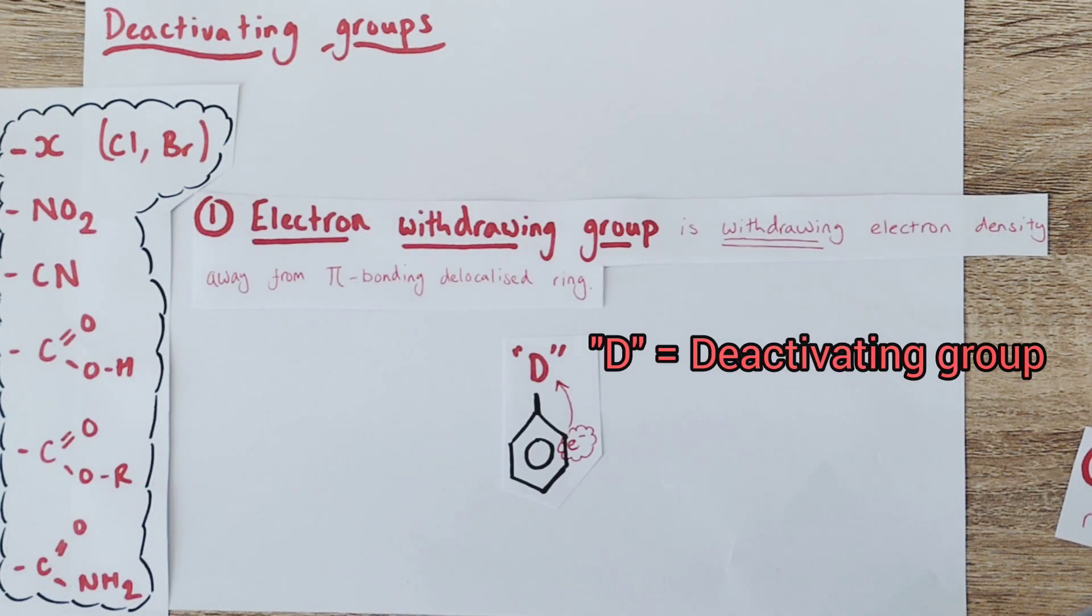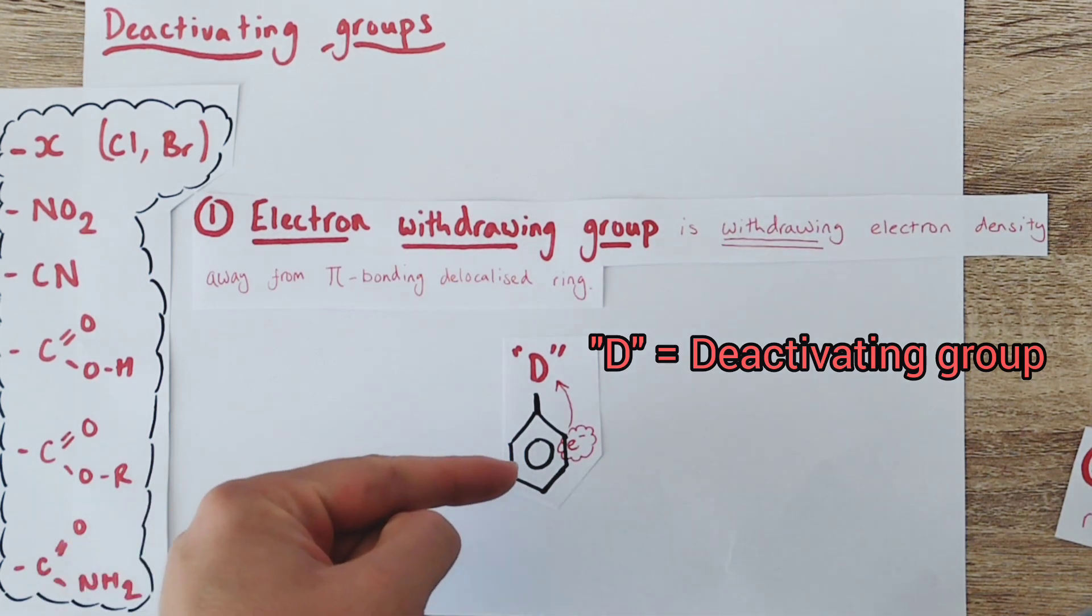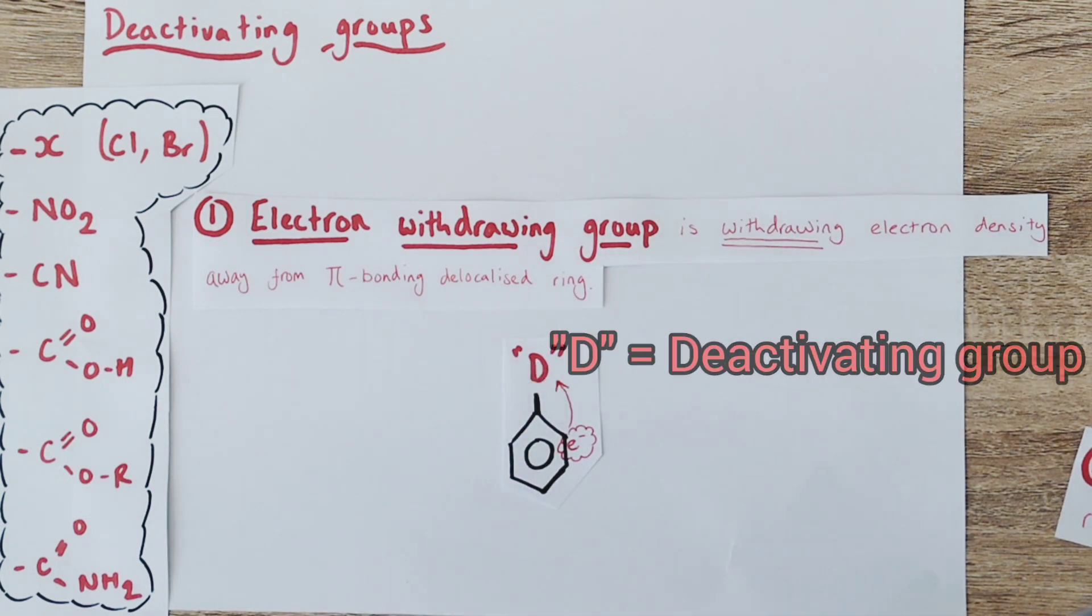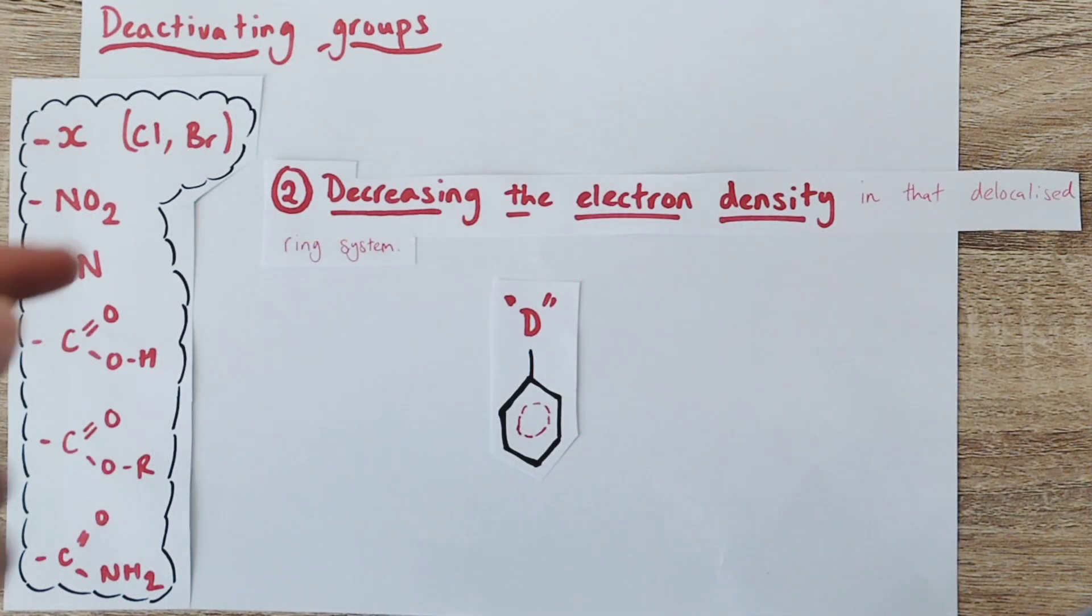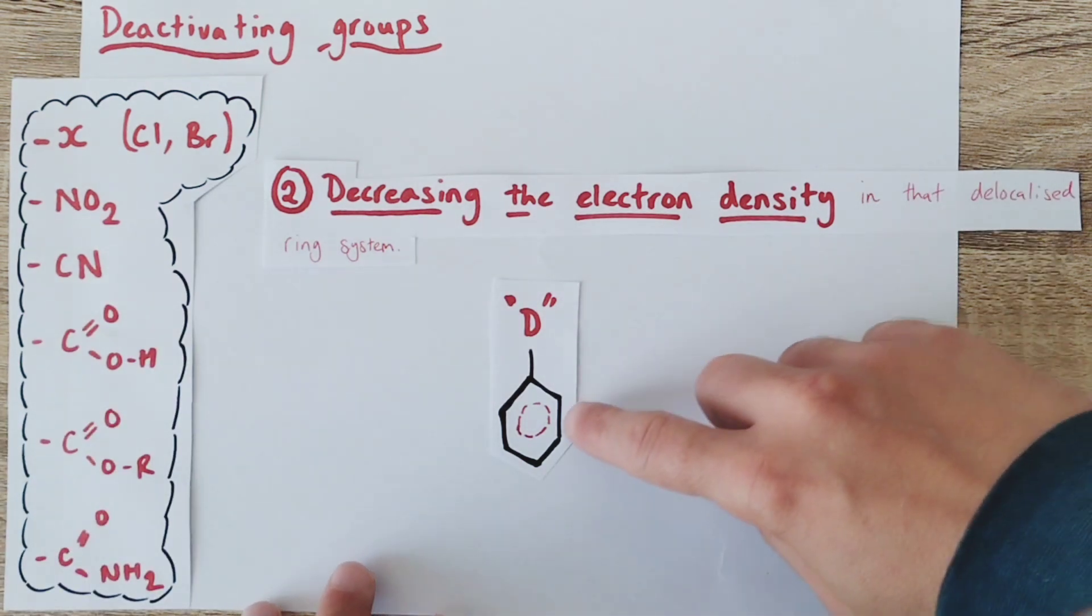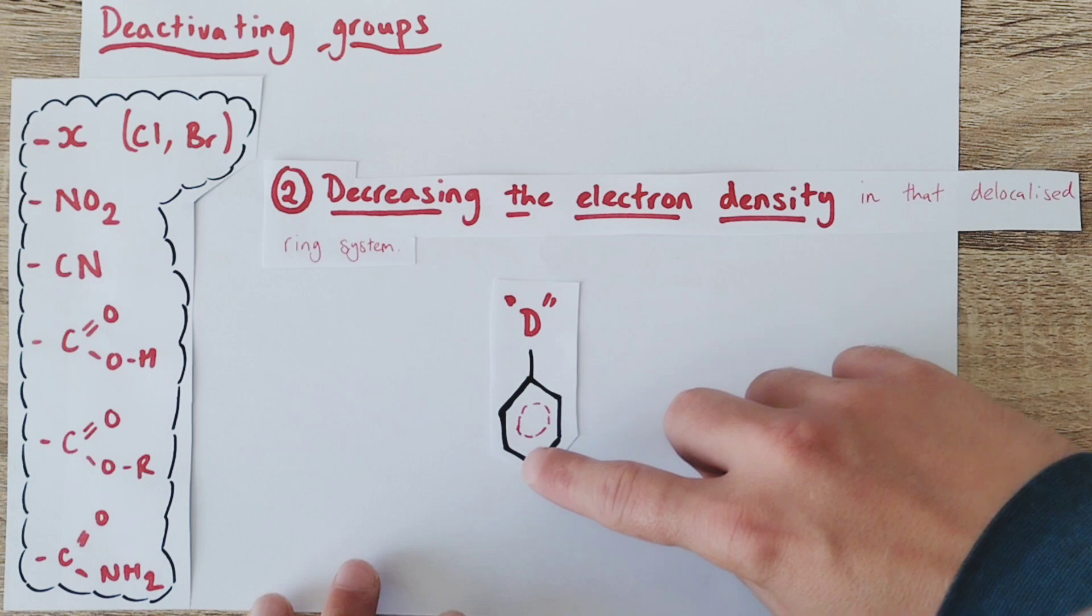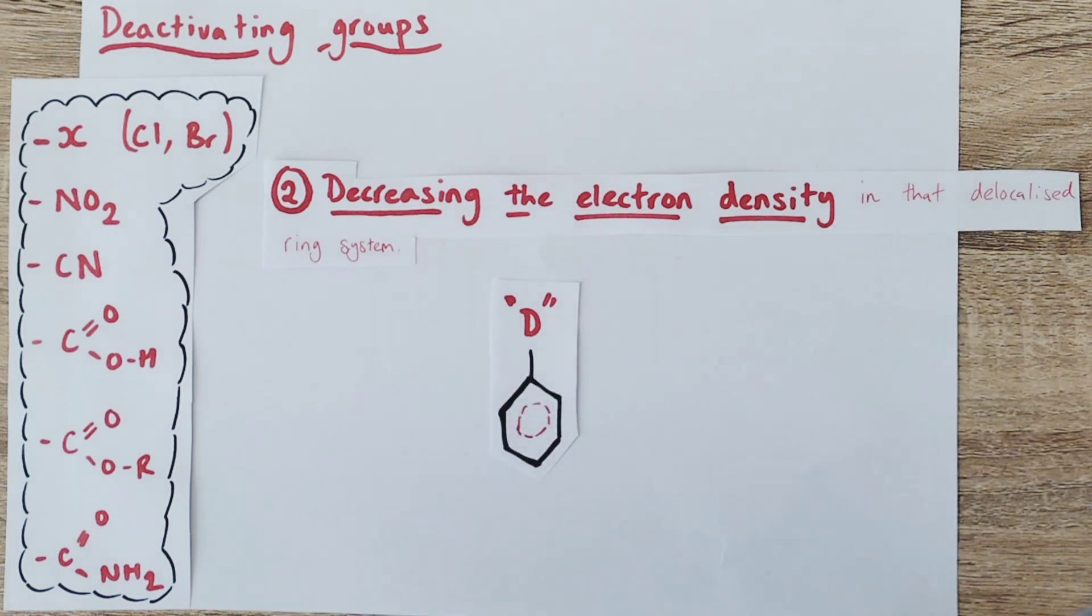So contrary to activating groups, deactivating groups are electron withdrawing in nature. They will be taking away, withdrawing electron density from the delocalized ring towards the deactivating group itself. This will have the effect of decreasing the electron density in the delocalized ring system, as shown by my rather emaciated delocalized ring here, which has lost electron density, is bereft of electron density.